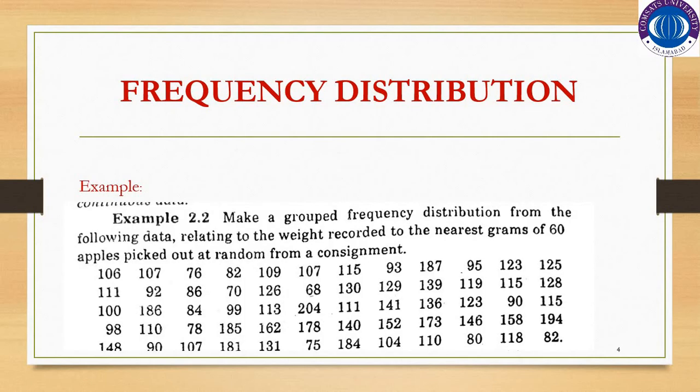We studied that there are three methods of presentation of data. For ungrouped data, we use the textual method and stem-and-leaf plot. For grouped data, we can make a frequency distribution from ungrouped data to convert it into grouped data. We can also make graphs and diagrams. In the previous lecture, we defined how to make a frequency distribution.